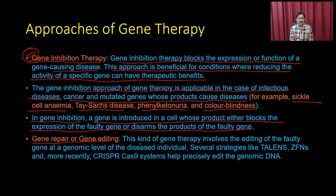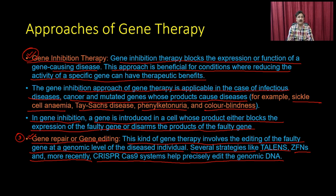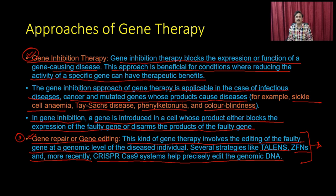The third approach is gene repair or gene editing, which involves editing the faulty gene at the genomic level in the disease individual. Several tools such as TALENs, zinc finger nucleases, and more recently the CRISPR-Cas9 system have been precisely used to edit genomic DNA. People have performed genome editing using CRISPR-Cas9 to alter the genome of individuals, including a baby in China, which raises ethical concerns.